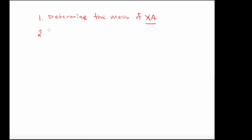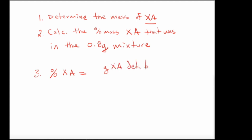Number two, we're going to have to calculate the percent mass of XA that was in the original 0.8 grams of the mixture. That calculation is the following. So percent mass of XA is going to be the grams of XA determined by titration, and that is going to be divided by 0.8 grams of the mixture, then times 100.